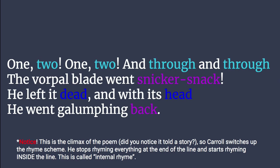We started with our introduction: Twas brillig, and the slithy toves did gyre and gimble in the wabe. We come to the rising action, the introduction of the problem: shun the frumious bandersnatch, beware the jabberwock, my son. We come to the actual facing of the problem — here is the jabberwock, he meets the son — and then 'he left it dead, and with its head' is the climax. Because it's the climax, Lewis Carroll switches up the rhyme scheme. He stops rhyming everything at the end of the line, which is called end rhyme, and starts rhyming inside the line — this is called internal rhyme.